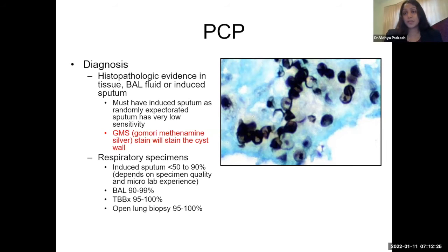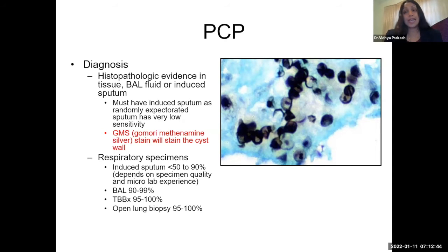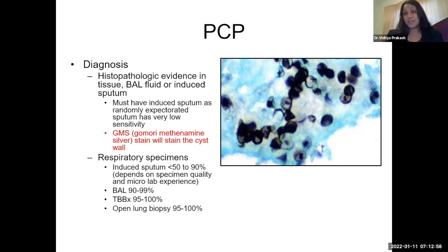Respiratory specimen sensitivity depends on the specimen. Open lung biopsy is the most invasive but most sensitive, at 95–100%. Transbronchial biopsy is similar. Bronchoalveolar lavage is 90–99%. Induced sputum, which is much better than randomly expectorated sputum, ranges from less than 50% to up to 90% depending on the quality of the specimen and the experience of the microbiology lab.